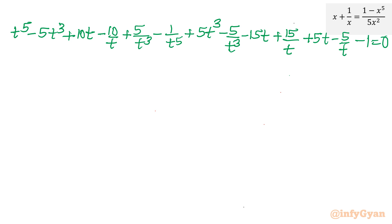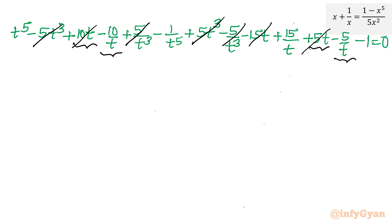Now several terms cancel immediately. The +5t³ and −5t³ cancel. The +5/t³ and −5/t³ cancel. For the t terms: 10t minus 15t plus 5t cancels to zero. For the 1/t terms: −10/t plus 15/t minus 5/t also cancels. What remains is t⁵ minus 1/t⁵ minus 1 equals 0, or equivalently t⁵ minus 1/t⁵ equals 1.